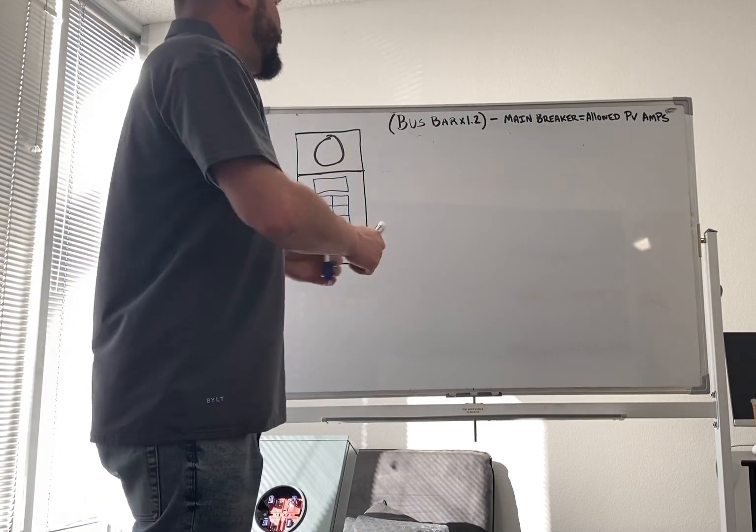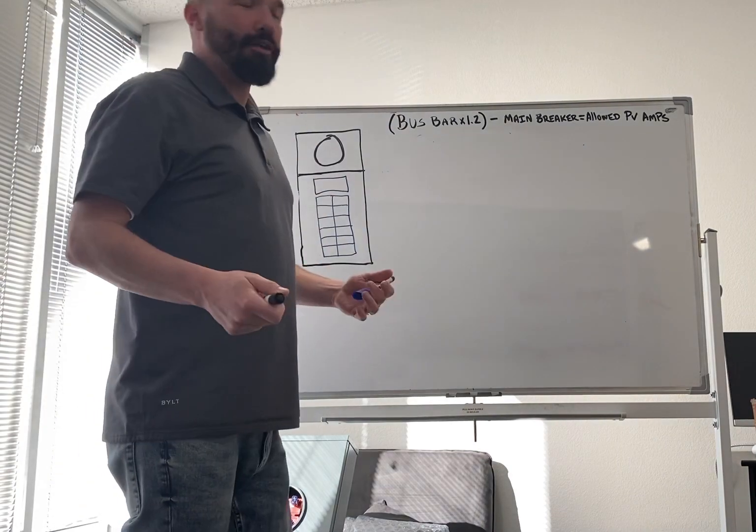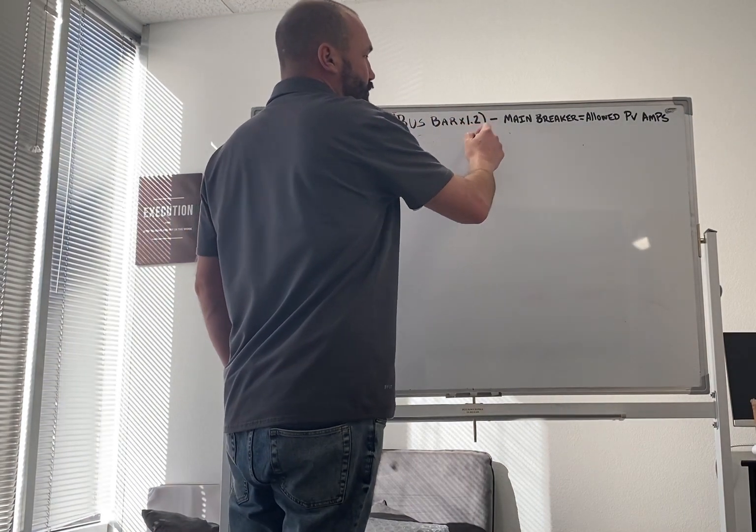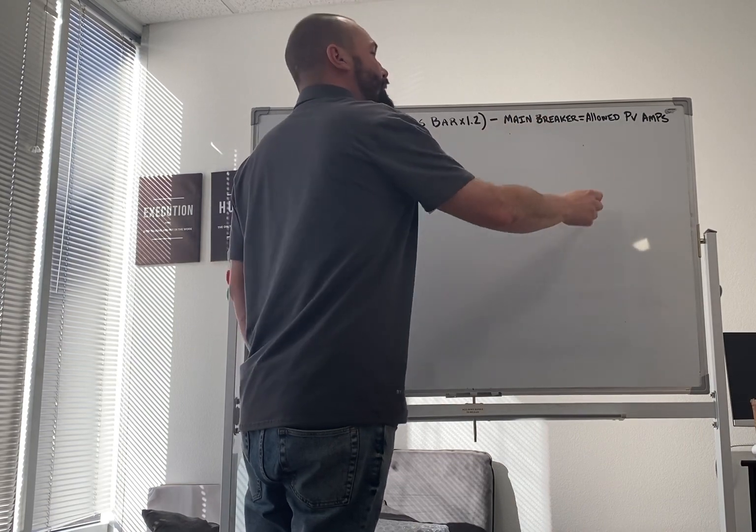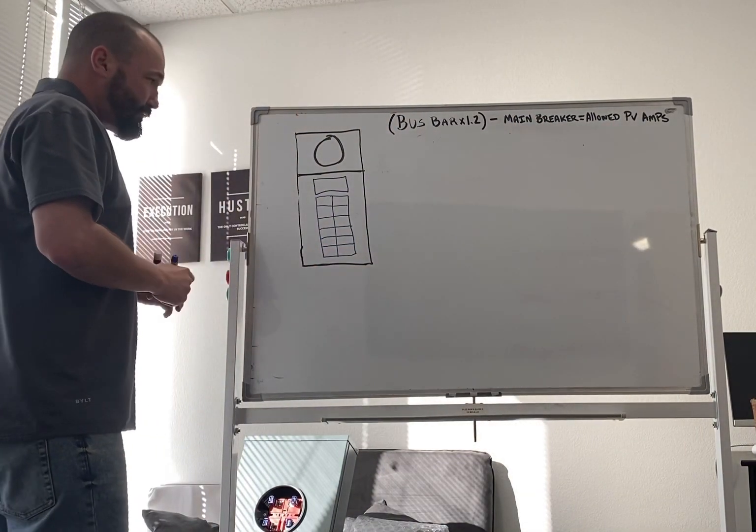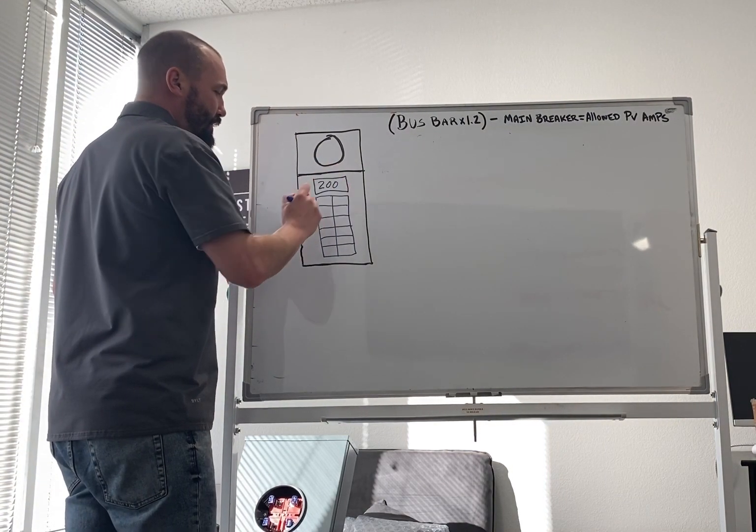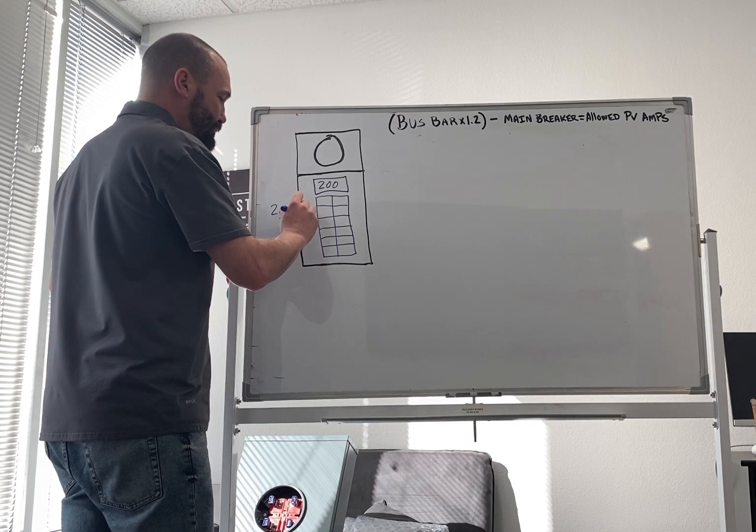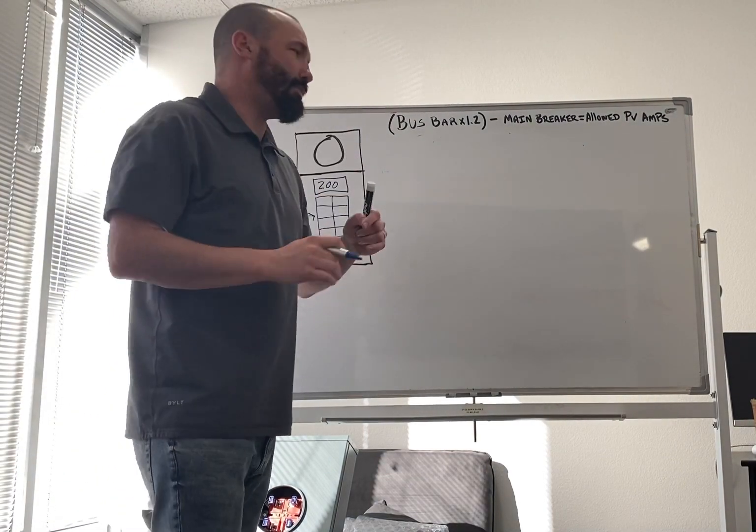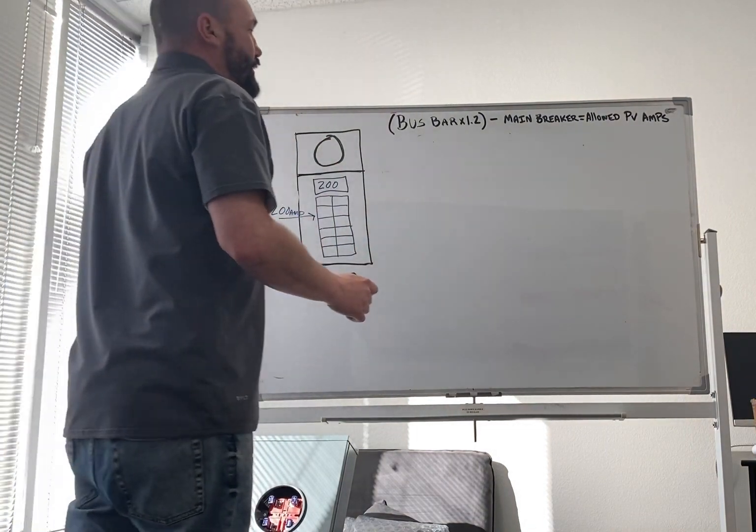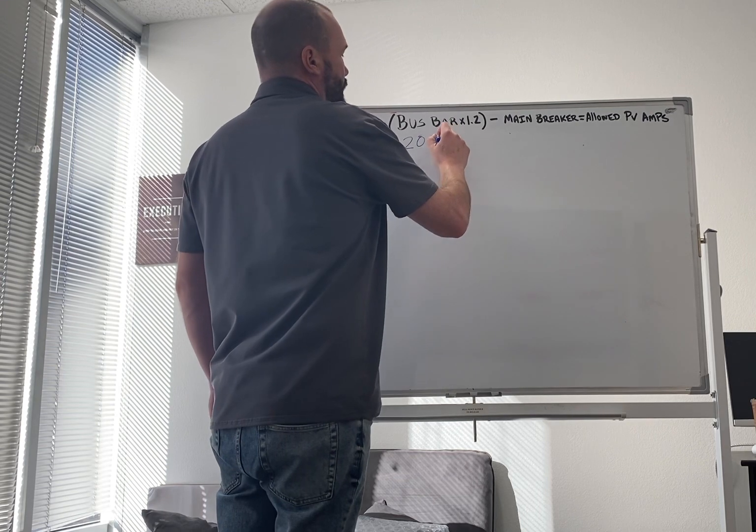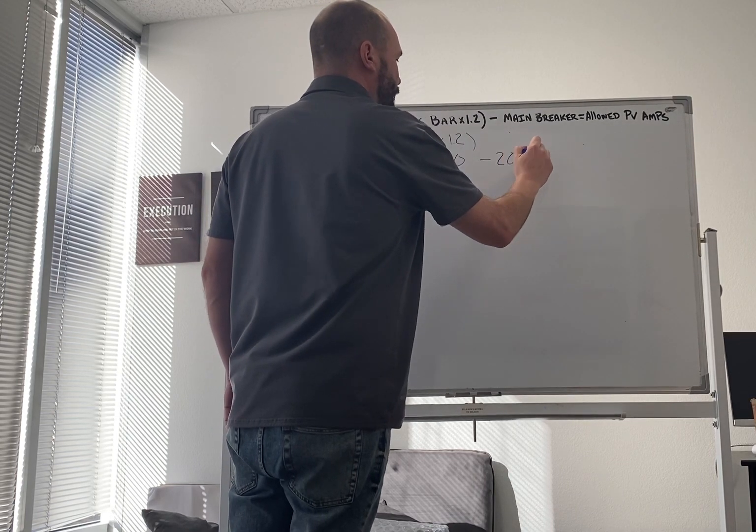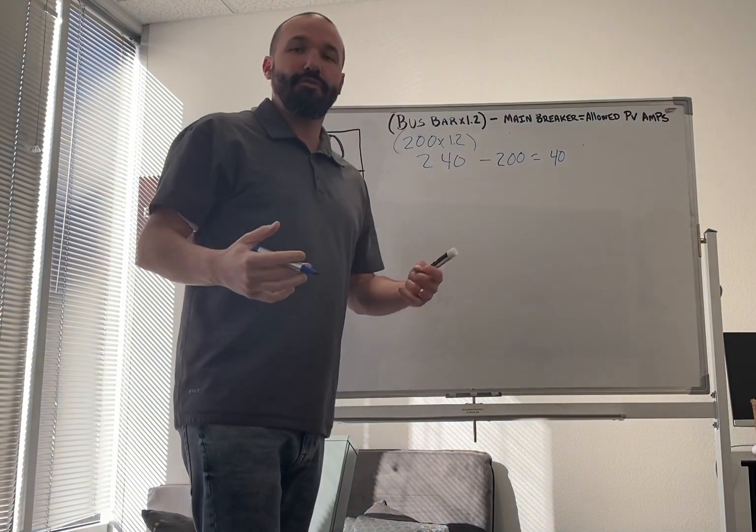First thing you have to know is to figure out how many amps you're allowed to backfeed. I don't know how other states are, I'm just talking about California. You take the bus bar rating, multiply that by 1.2 minus the main breaker. That gives you your allowed PV amps. So let's say this main breaker right here is 200 amps and the bus bar right here is 200 amps. You see the bus bar rating on the inside door of the panel. So let's say it's 200, 200. Well, my bus bar times 1.2 is 240 minus my 200 amp main breaker equals 40 amps. So I'm allowed to backfeed 40 amps on this panel.